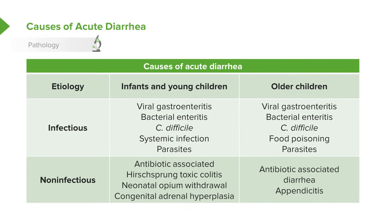Neonates — and we're seeing more of this than ever before — are exposed to opiates in utero, and as they come out, diarrhea is a common result of withdrawal from opiate exposure. Patients with congenital adrenal hyperplasia will often have diarrhea at birth. In older children, we again see antibiotic-associated diarrhea.